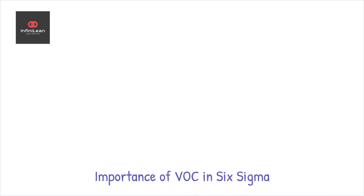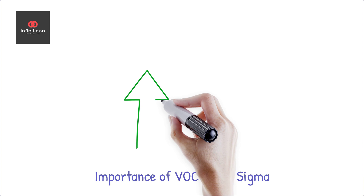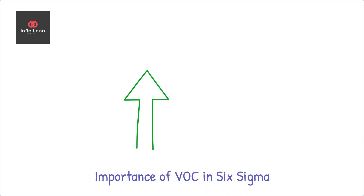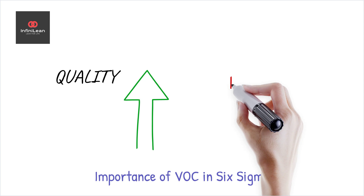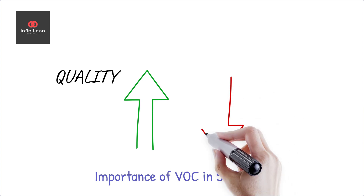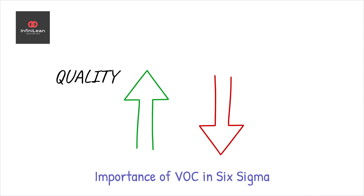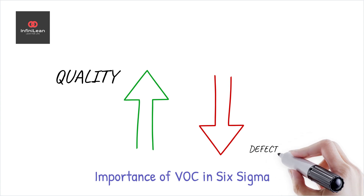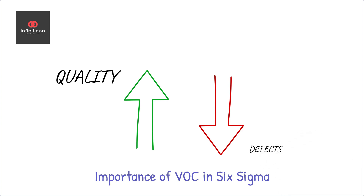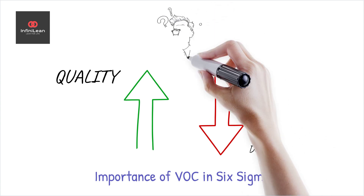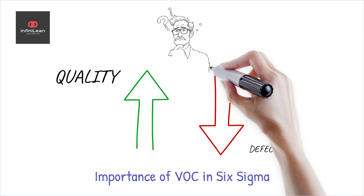Why is VOC essential in Six Sigma? Six Sigma's goal is to enhance quality and reduce defects. However, these improvements only hold value if they address what customers genuinely care about. By integrating VOC, Six Sigma practitioners ensure their projects are customer-centric, systematically linking customer desires with processes.